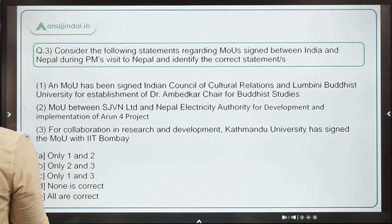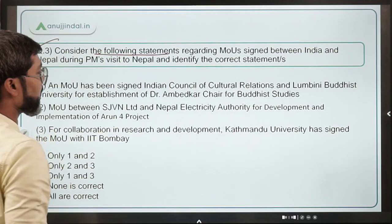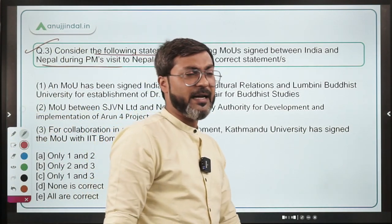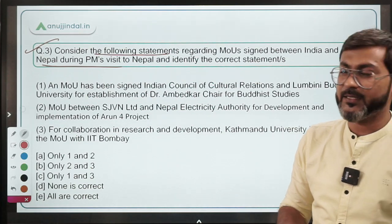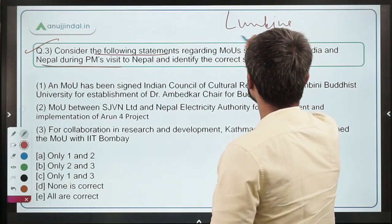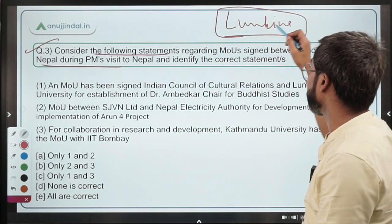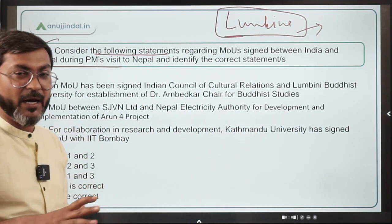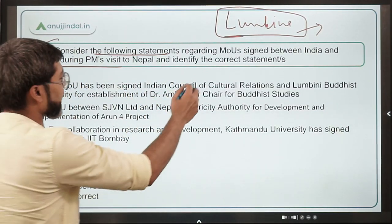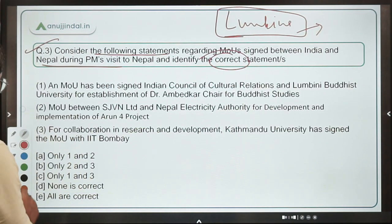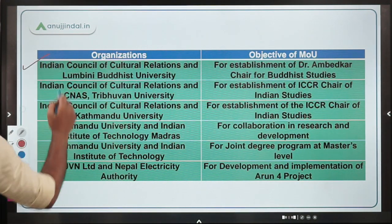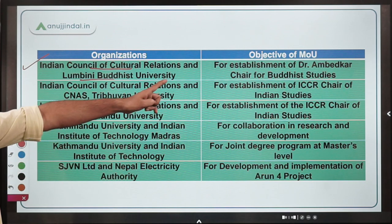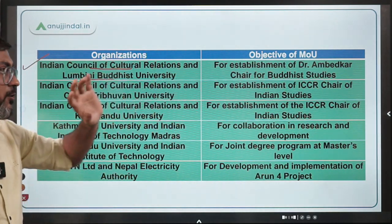Question three is very important. Consider the following statements regarding MOUs signed between India and Nepal during the Prime Minister's visit to Nepal. The visit took place recently on Buddha Jayanti, and Lumbini is the birthplace of Gautam Buddha. Six MOUs were signed between India and Nepal, and you need to identify the correct statements regarding those MOUs.